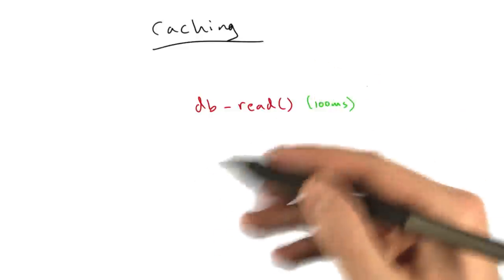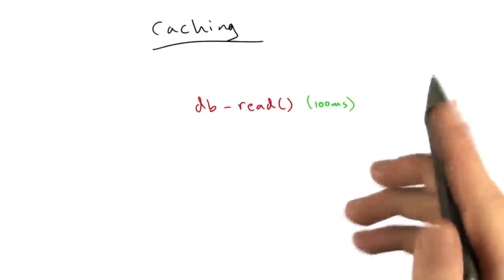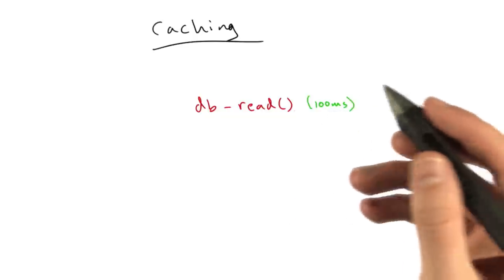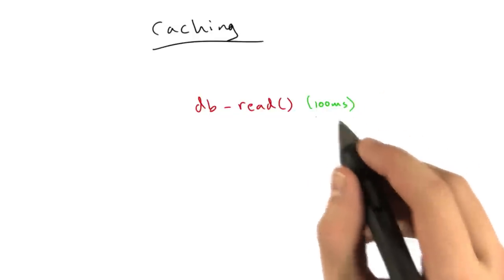Or you start doing multiple requests at the same time, and your database starts to get pummeled because it's trying to do this complicated query all at the same time, and this 100 milliseconds maybe turns into 200 or 300 milliseconds or 500 milliseconds. Who knows? When your database is under load, it starts to really get angry at you.